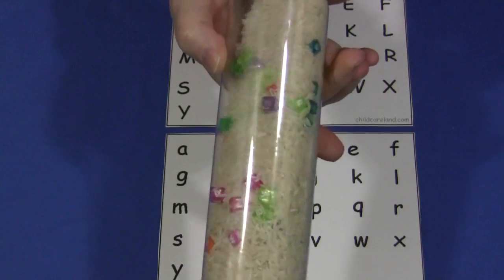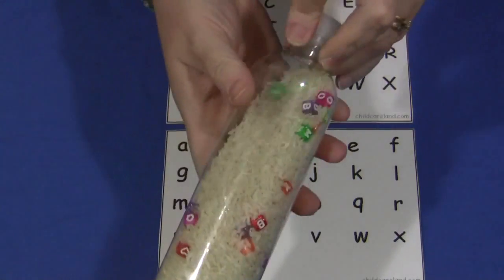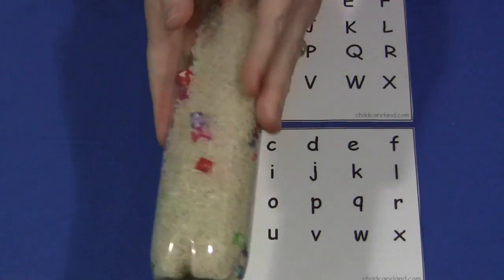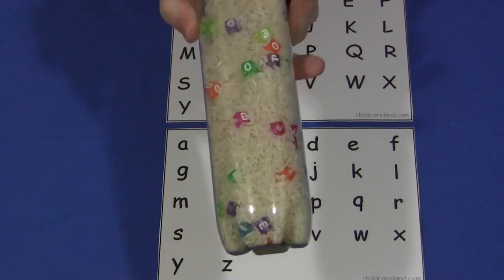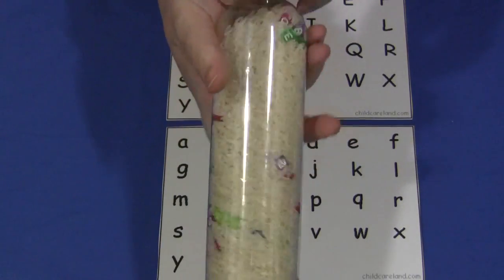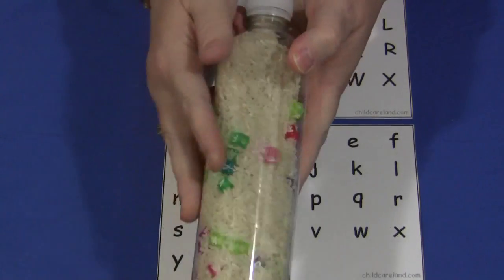Then I put colored alphabet beads in, and because this was a larger bottle, I decided to put two of each letter in the alphabet, but that's certainly up to you. For younger children, you may want to put two or three of each letter. For older children, maybe just one for them to look through in the rice.